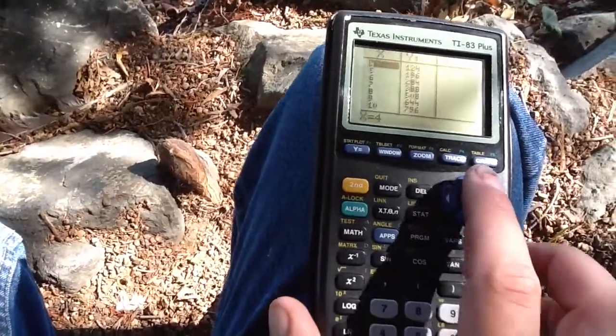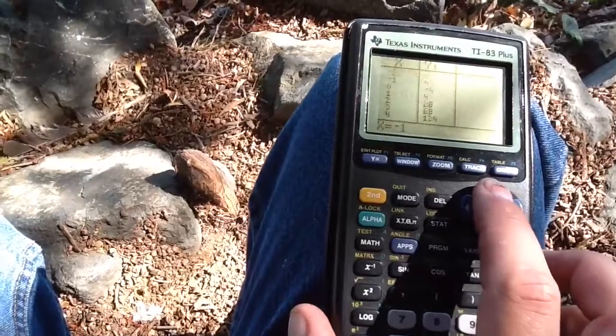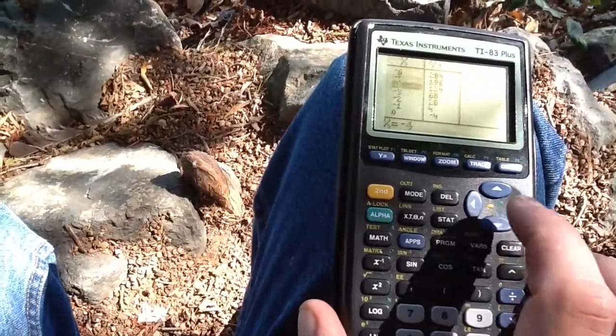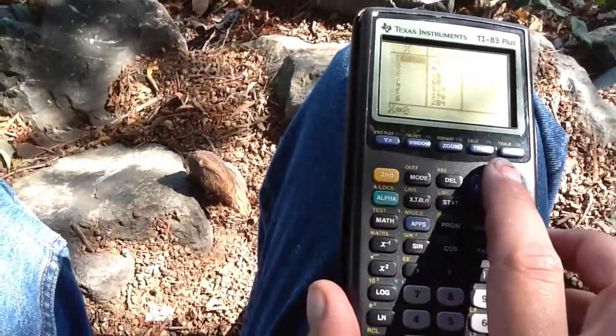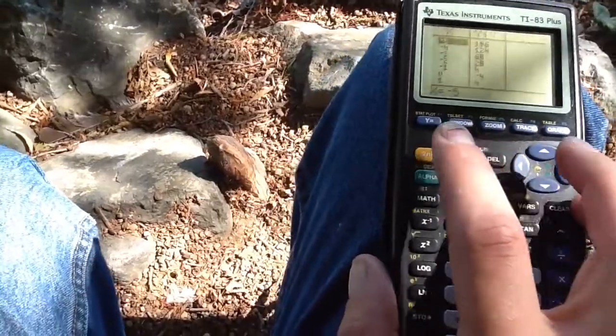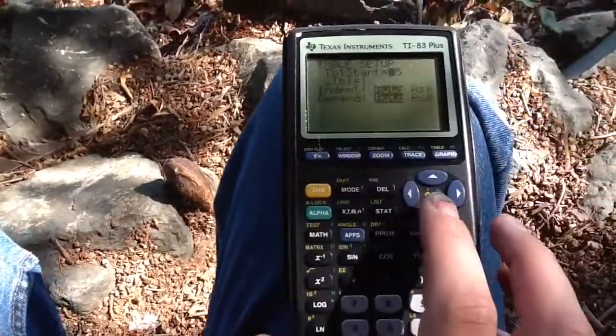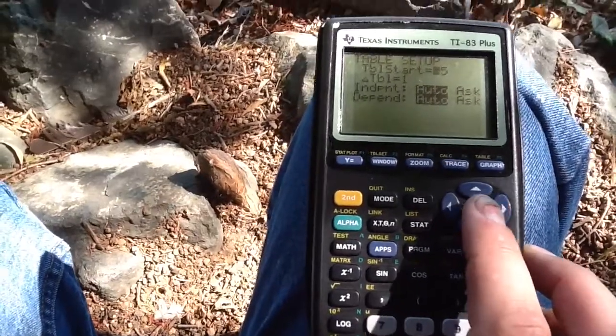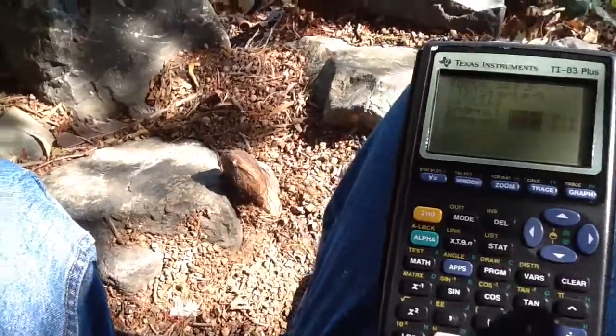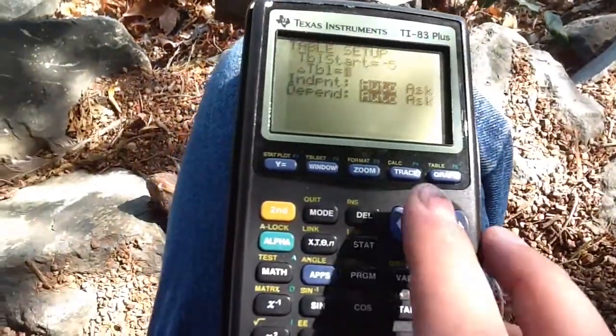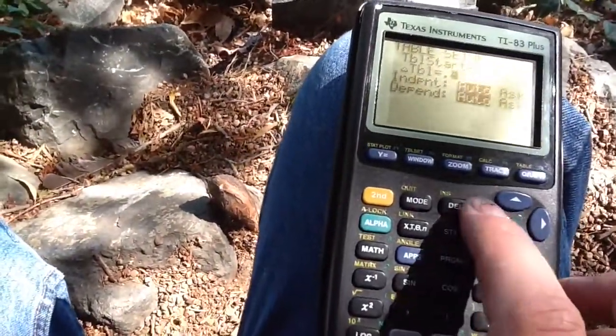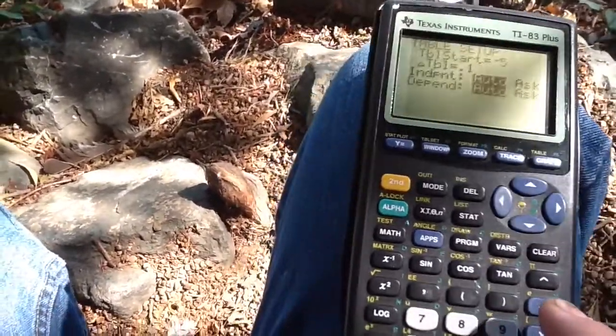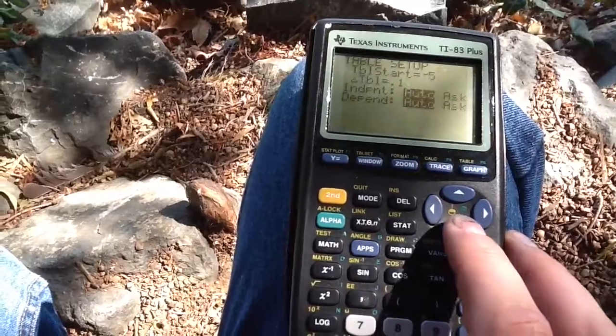And what it's showing me is that I could scroll up and down this thing with the arrows. It shows me what y value there is for each x value. Now, what if I wanted 0.5 or something like that? Well, I could go and set up my table by pressing second window. And it says right now the table's going to start at negative 5, and it's going to increase by 1 each time we have a new x value. So if I want to change that, I certainly can.